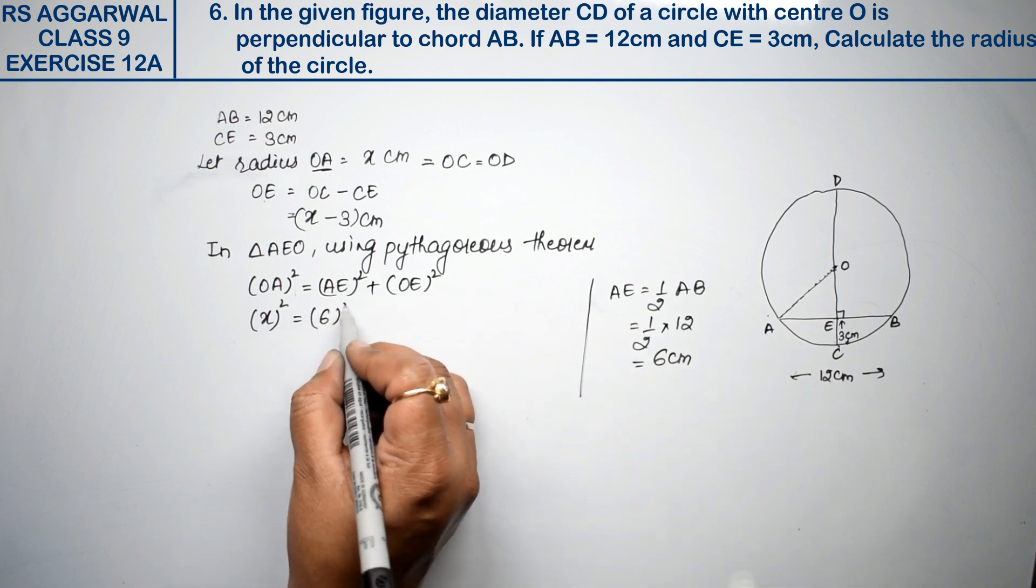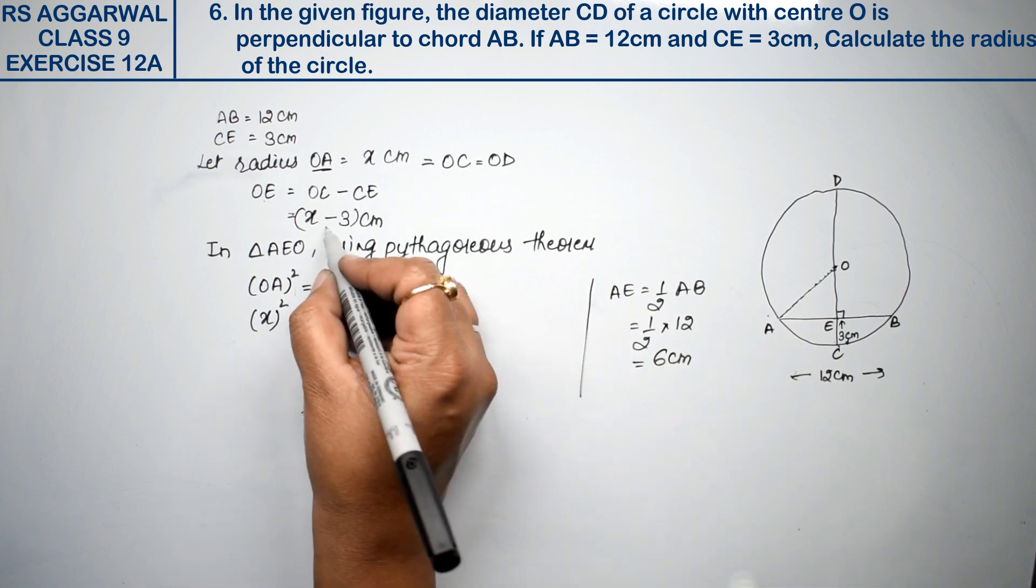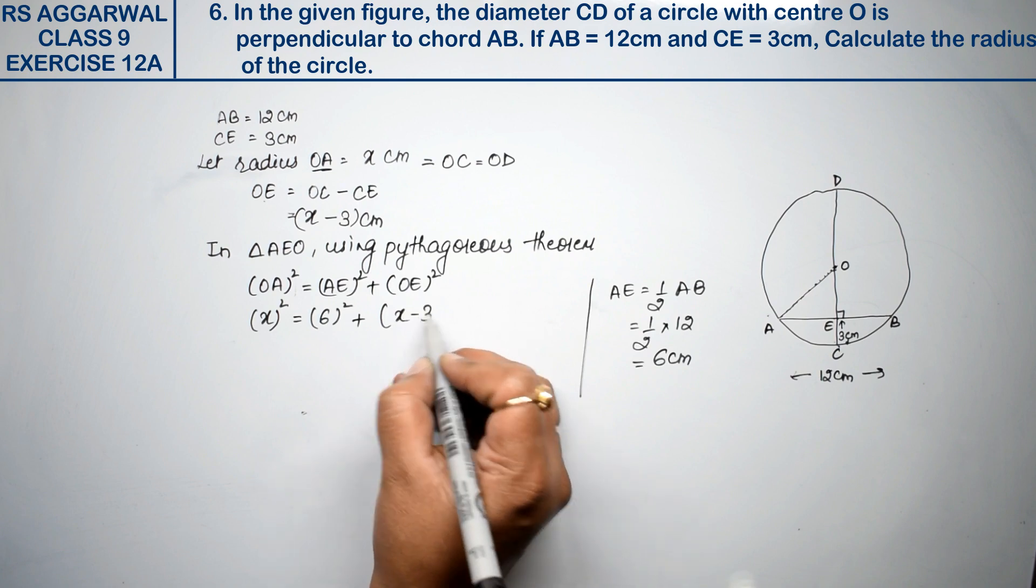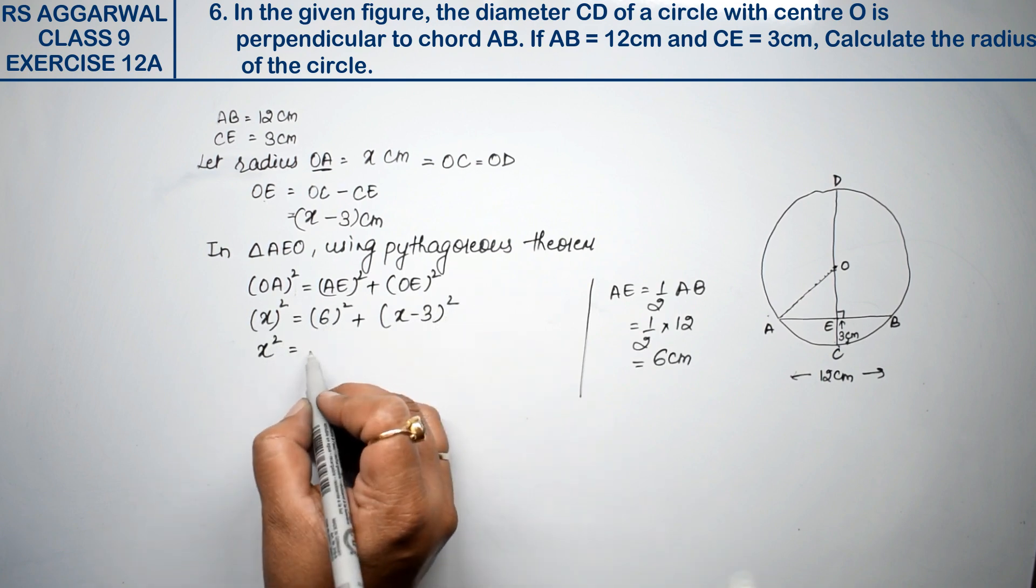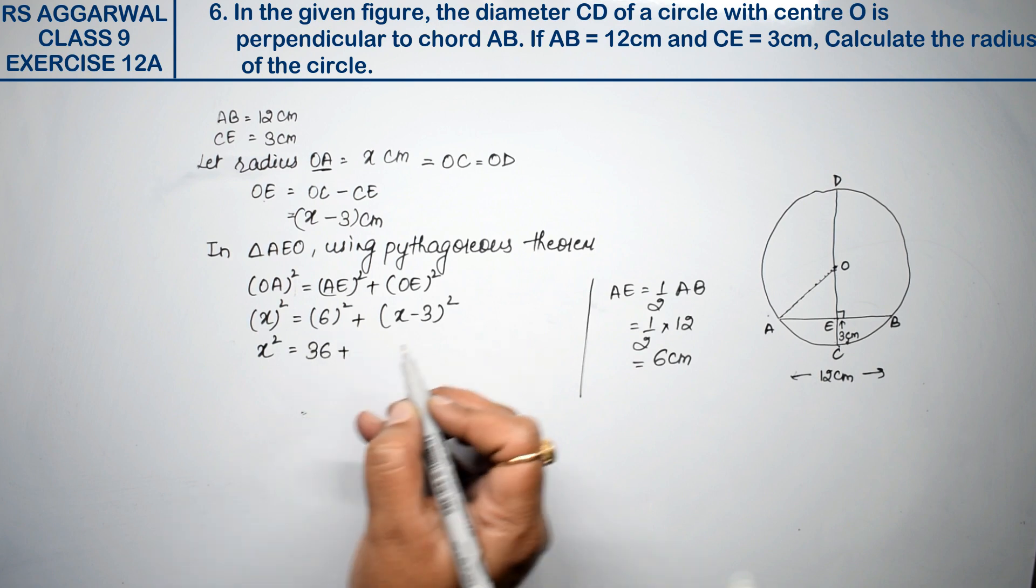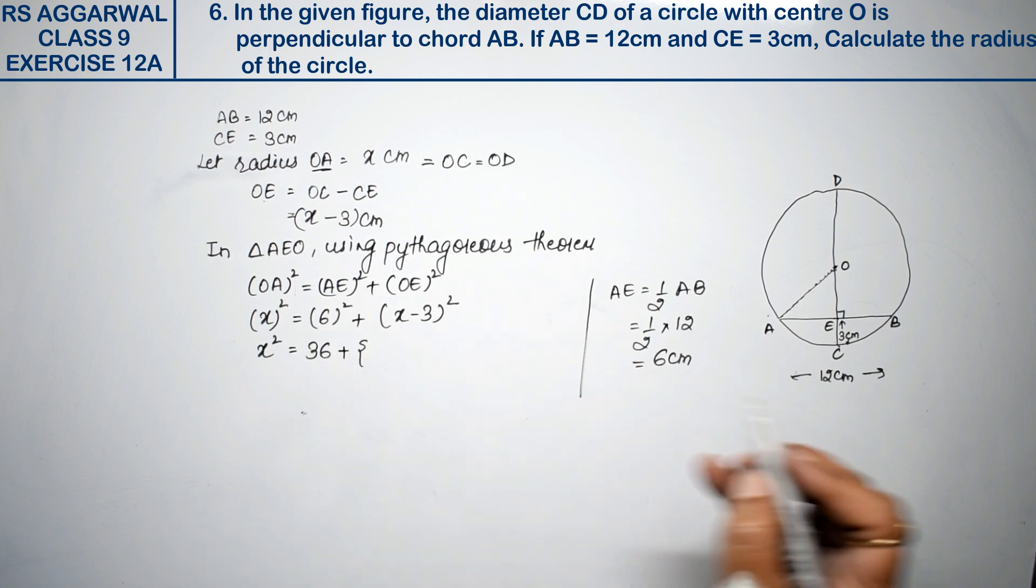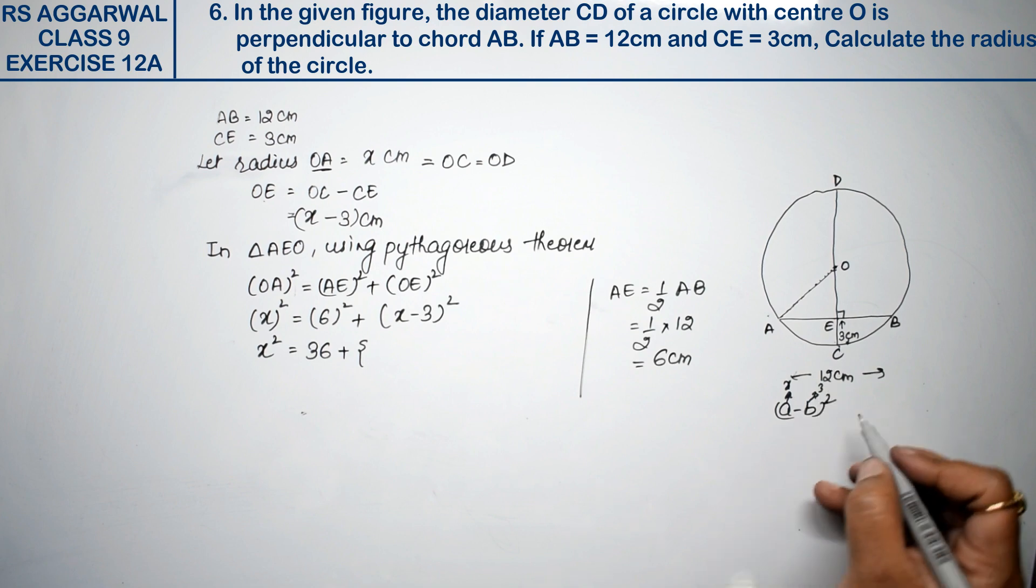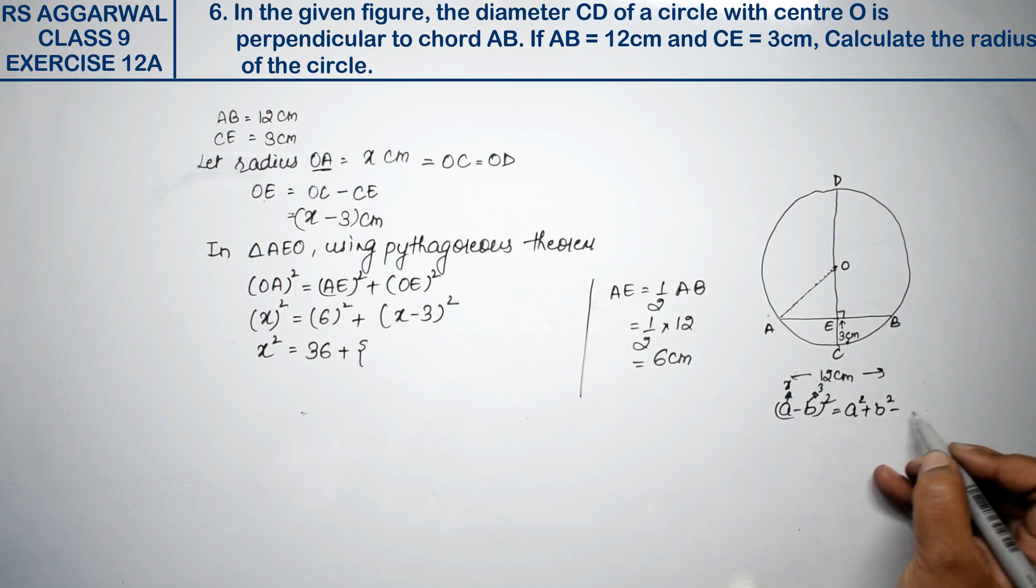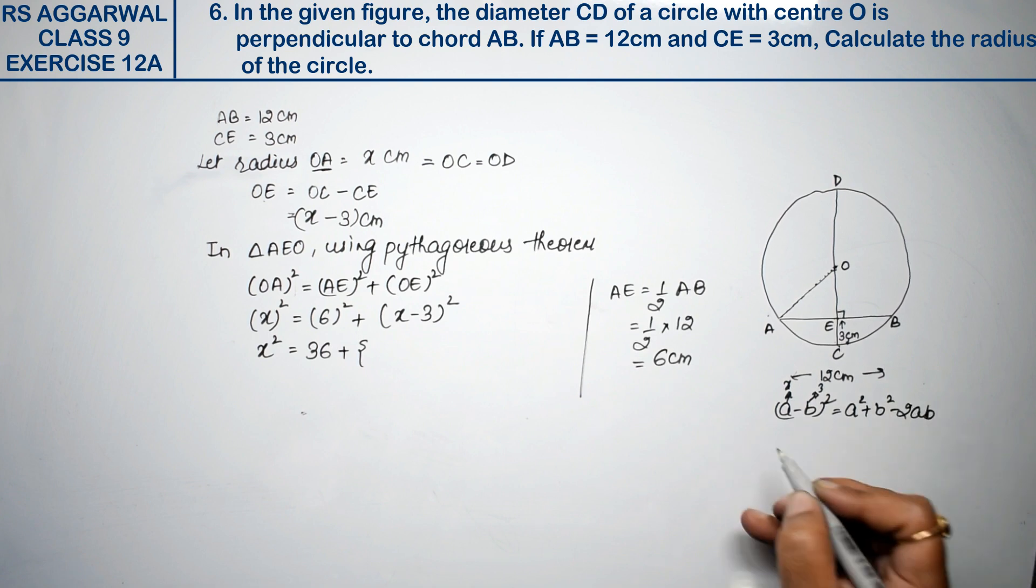So 6 whole square plus OE was x minus 3 whole square. Now this is x square, this is 6 times 6 is 36 plus this is, a minus b whole square formula will apply. a is x and b is 3, right? a minus b whole square formula is a square plus b square minus 2ab, right? In place of a I write x.